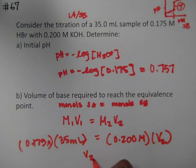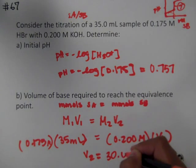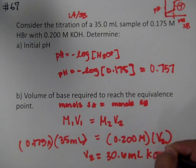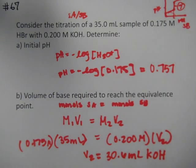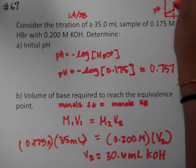So if we solve this out for V2, we're going to get roughly 30.6 milliliters of KOH is required to get to the equivalence point.